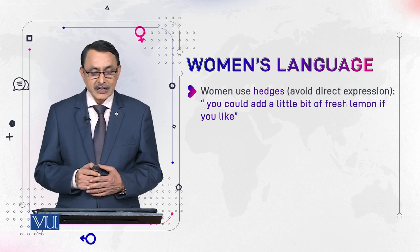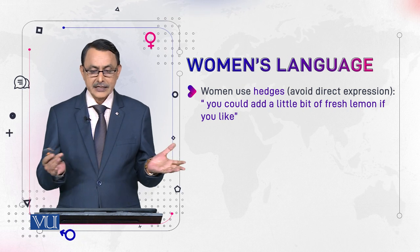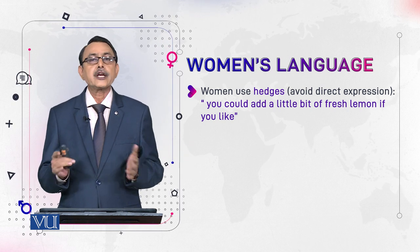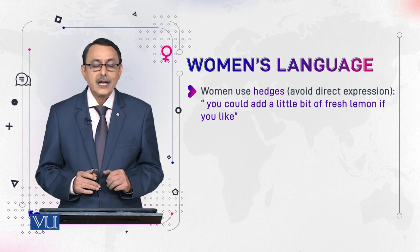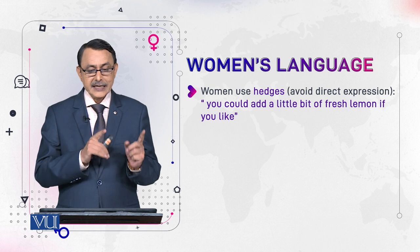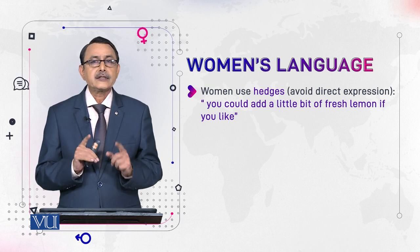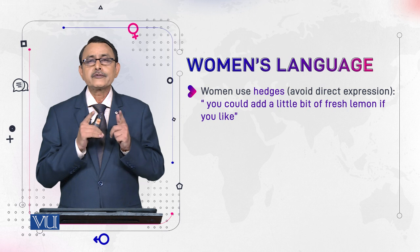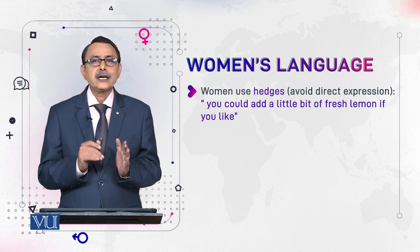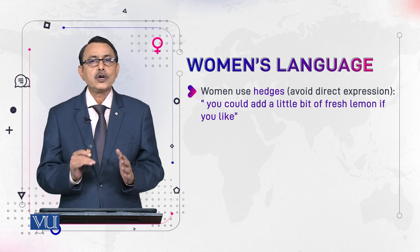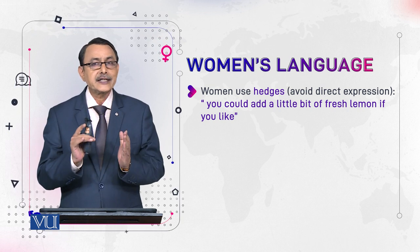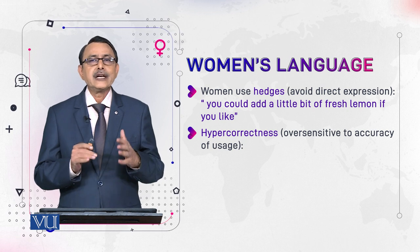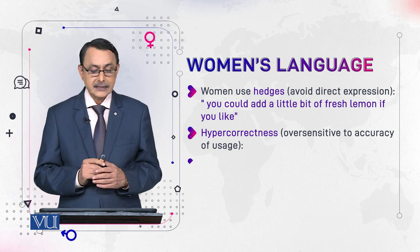Credit for this goes to Robin Lakoff. Some features she identified are shared here. Women use hedges — meaning they avoid direct expression. For example, instead of a direct command, they say 'you could add a little bit of fresh lemon if you like.' The use of 'could' shows they are avoiding direct imposition on another person and are not making a direct request.